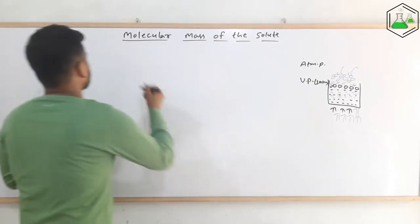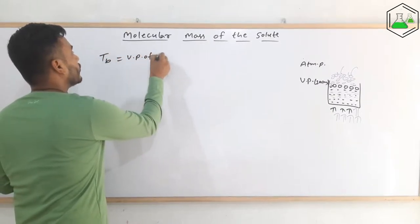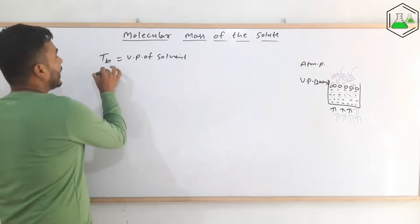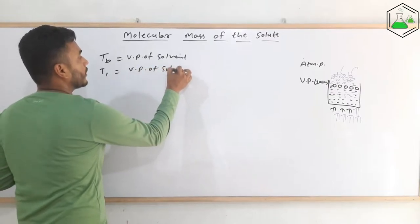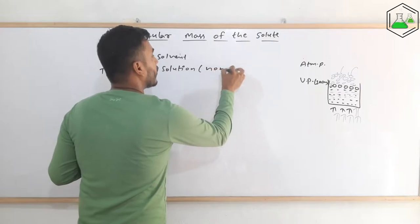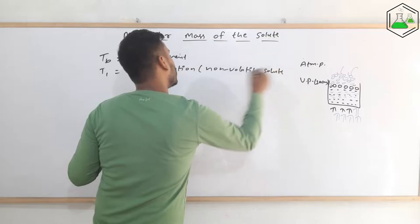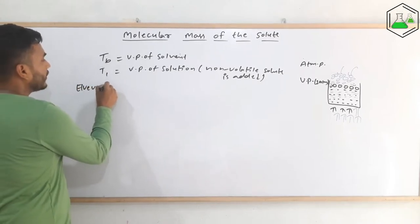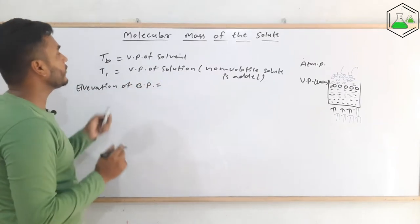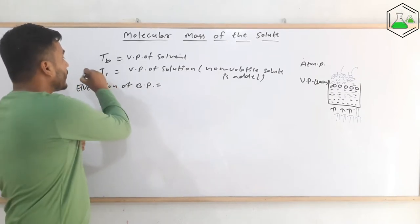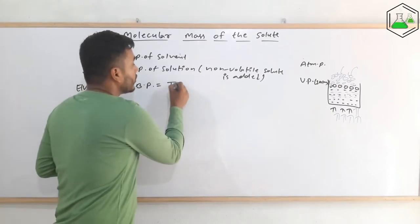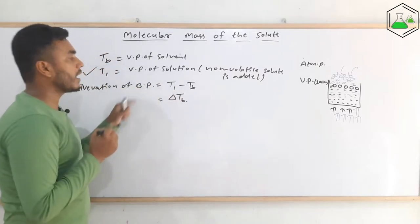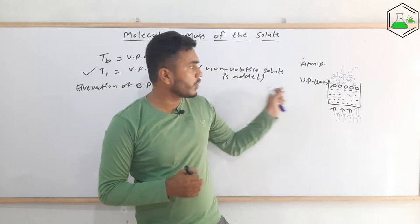There are two cases: Tb is the boiling point of the pure solvent, and T1 is the boiling point of the solution — that is, when non-volatile solute is added. The elevation of boiling point is equal to the difference between these two temperatures. T1 will be the greater temperature because more heat energy is supplied. So elevation of boiling point: del_Tb = T1 − Tb.